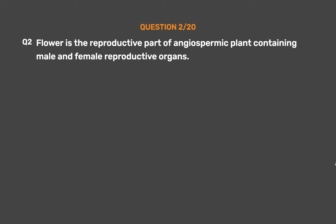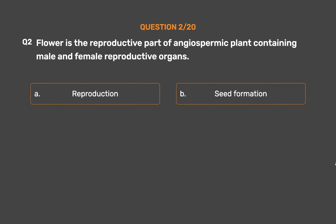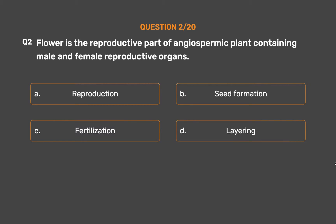Question No. 2. The process of fusion of male and female gametes to produce a zygote is called: Option A – Reproduction. Option B – Seed formation. Option C – Fertilization. Option D – Layering.